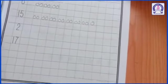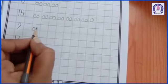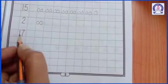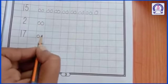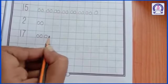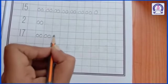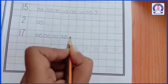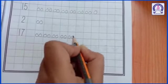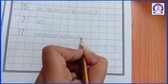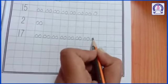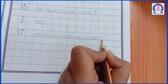Then number 2: 1, 2. Then 17: 1, 2, 3, 4, 5, 6, 7, 8, 9, 10, 11, 12, 13, 14, 15, 16, 17.